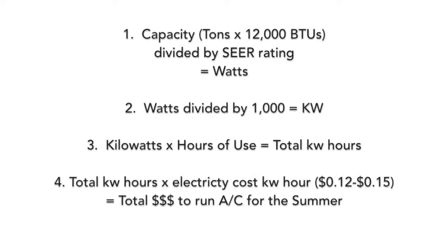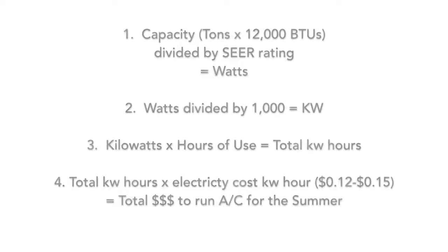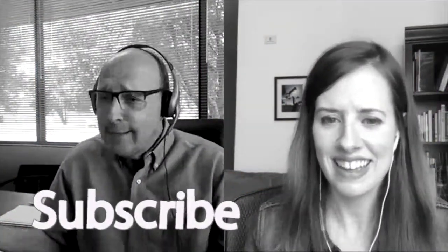That was a good explanation — you made the math not too painful. To review: take the capacity of the air conditioner in BTUs, using 12,000 BTUs per ton, and divide by the SEER rating. That gives you watts. Since we buy by kilowatts, divide by 1,000. Then calculate how many hours you'll use it — that gives you kilowatt hours. Multiply by what you pay per kilowatt hour from your utility bill. Easy peasy — it's really not that difficult. Thanks for the info, Dad. Talk to you later. Stay cool.